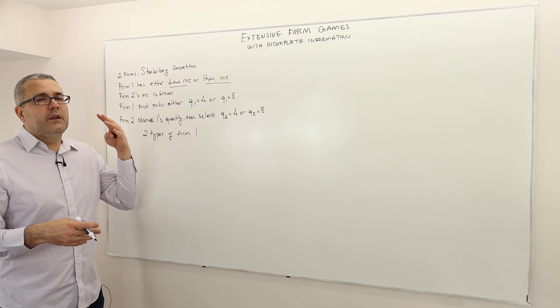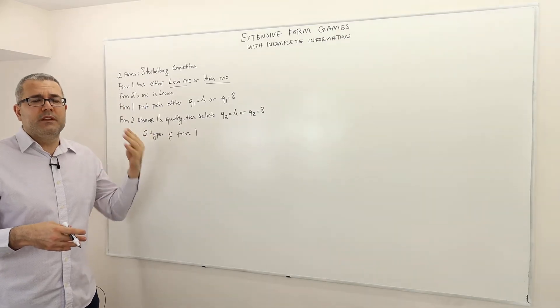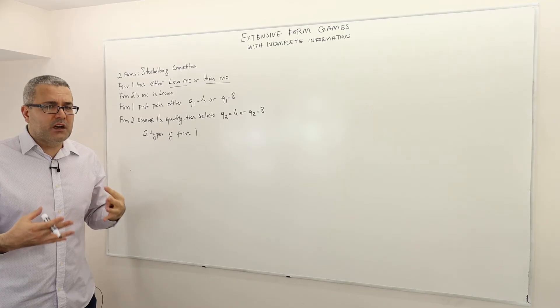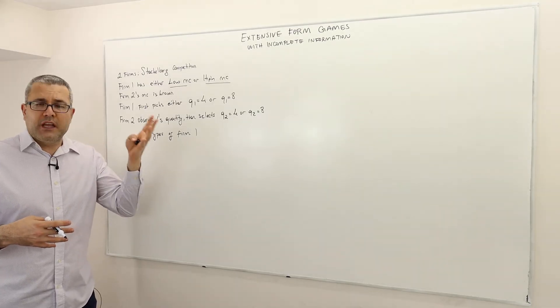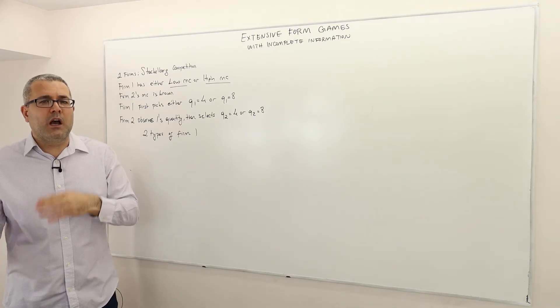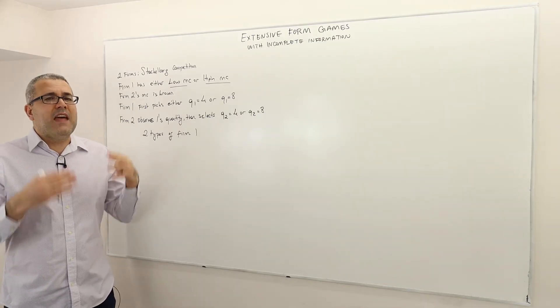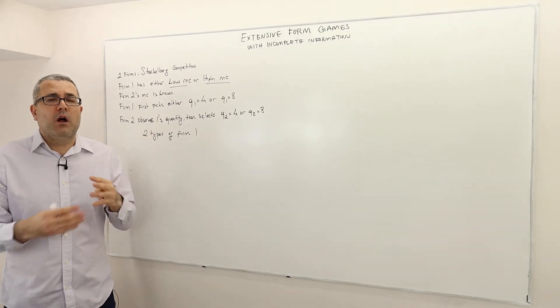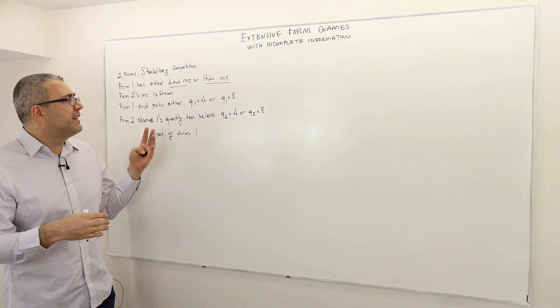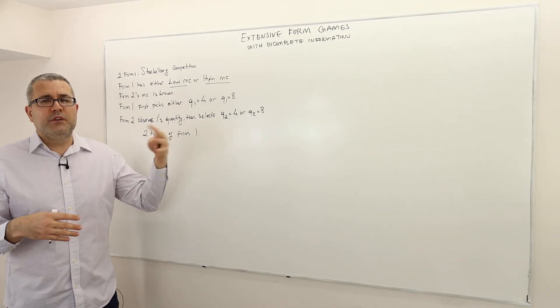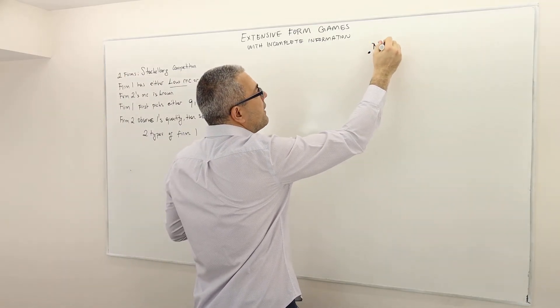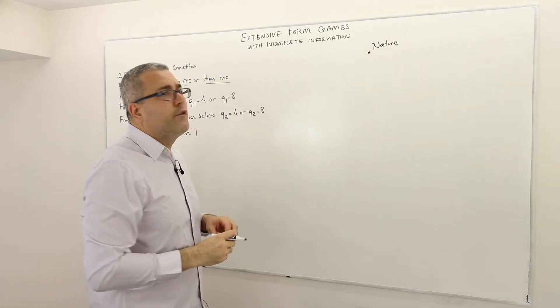Even if the CEO of firm 1 has determined the marginal cost of this firm, we do not want to incorporate this choice decision into our strategic environment. We would like to ignore that choice. At some point of time probably firm 1 decided to go with a low marginal cost or high marginal cost and then later decided to compete with firm 2. But we do not want to incorporate that choice of firm 1 when it determined its type.